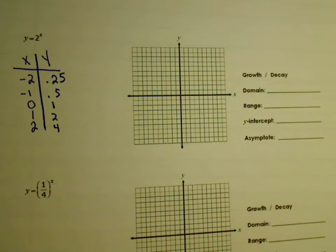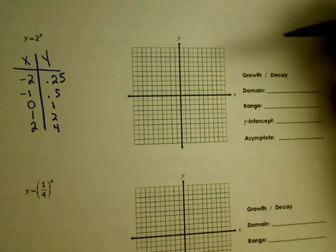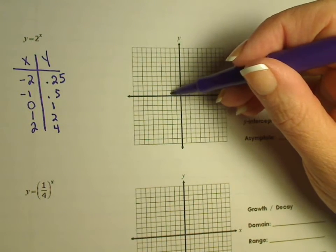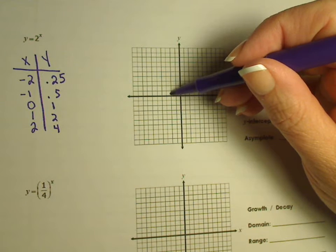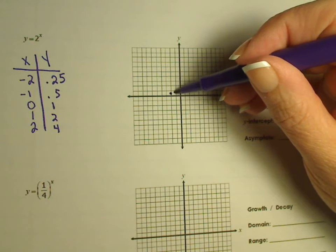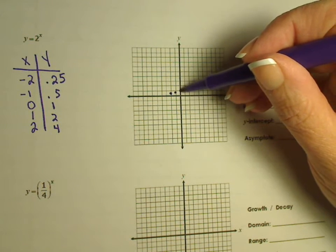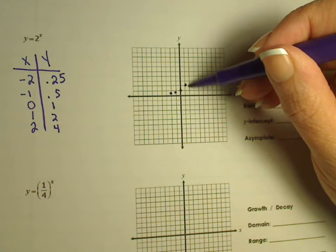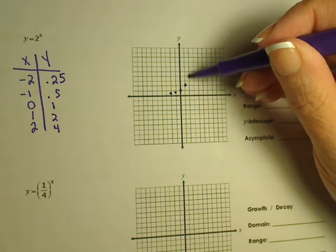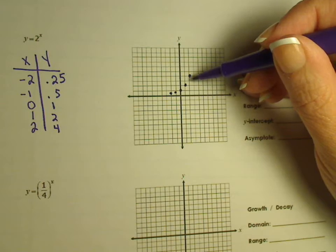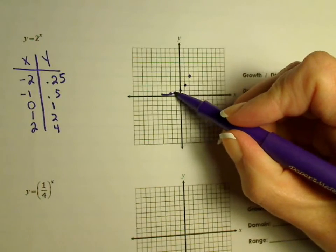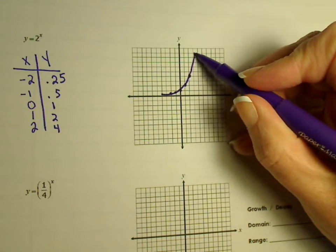So then we're going to graph it. So far, this is everything that we've already done. We have a negative 2, 0.25, a negative 1, and then over 1 up 2, over 2 up 4.